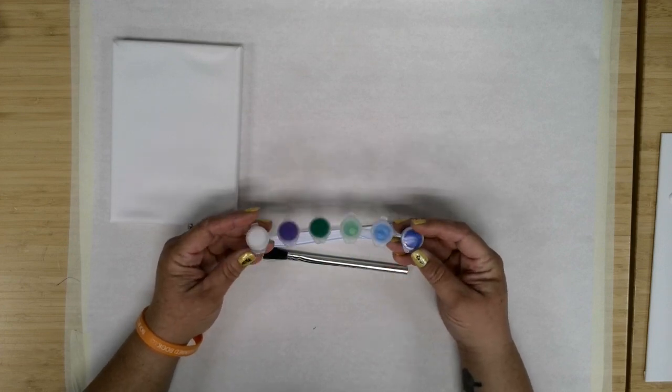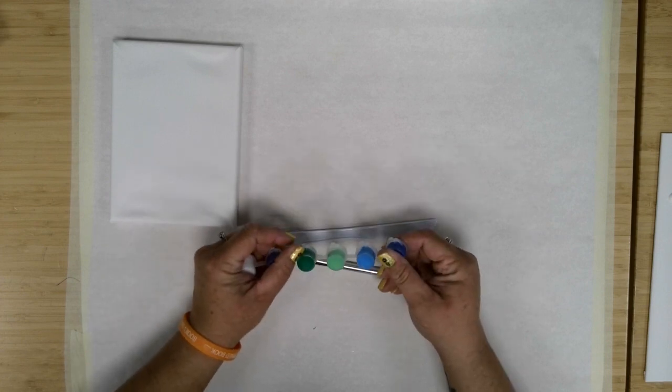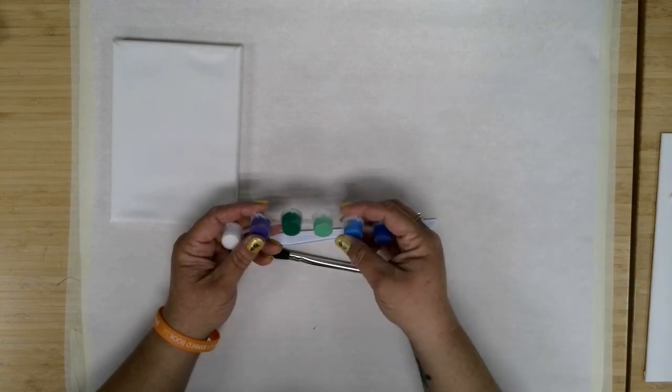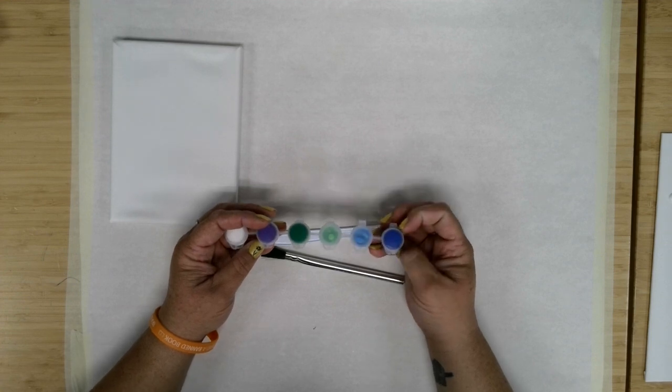I've got six colors: a white, a purple, a matte green, kind of a color shift green, a color shift chameleon blue, and then just a darker blue that's actually a mix of a few colors.